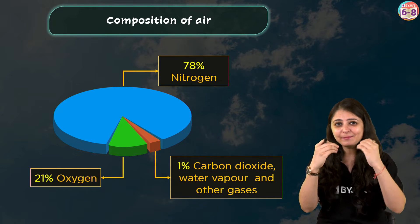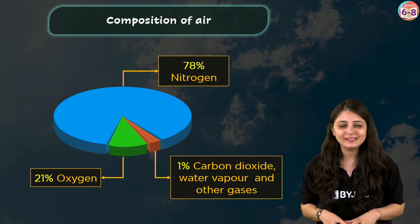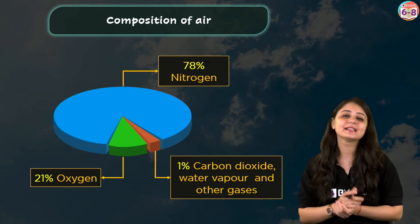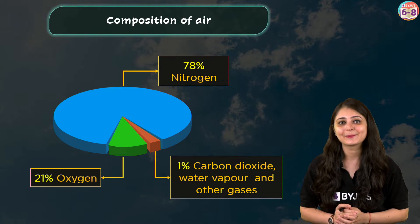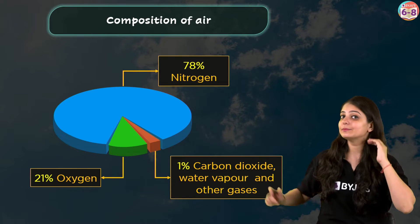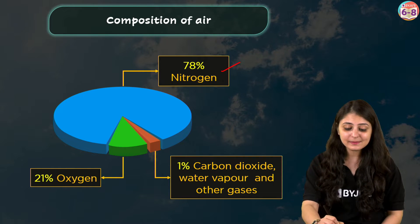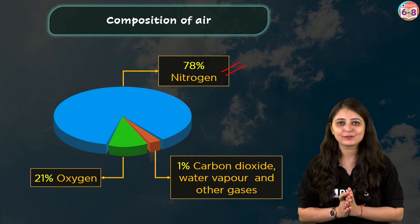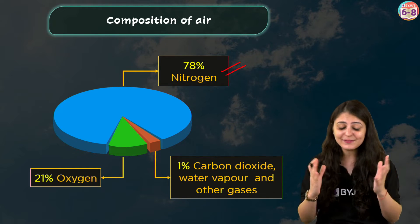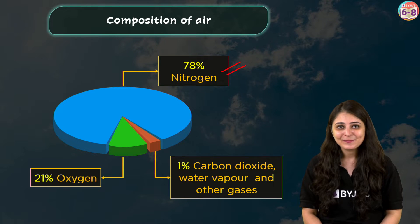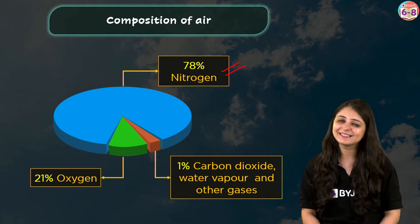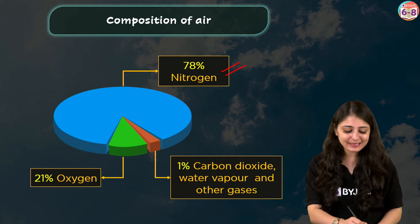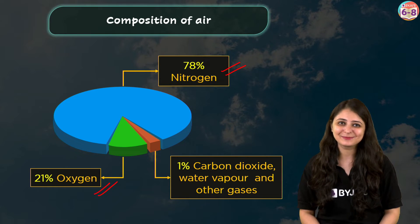The composition of air refers to the specific mixture of gases that make up the Earth's atmosphere. It describes the types and proportions of gases in the air. As you can see here, nitrogen is basically the most abundant gas in the Earth's atmosphere, making up about 78% of it. The most abundant gas is nitrogen. Next, oxygen makes up approximately 21% of the atmosphere.